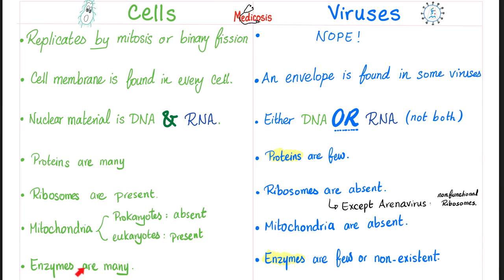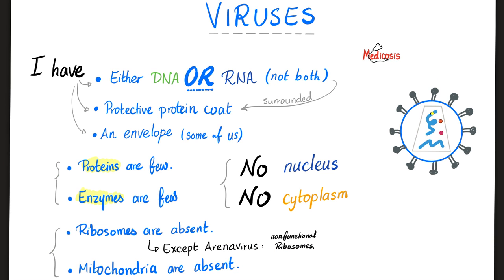If you have more proteins, you'll have more enzymes, because enzymes are proteins. But if your proteins are fewer, enzymes will be few. To let the virus speak for itself: 'I have either DNA or RNA — not both. I'm surrounded by a protein coat and sometimes an envelope. My proteins are few, enzymes are few. I do not have a nucleus, I do not have a cytoplasm. Ribosomes are absent most of the time. Mitochondria are absent.'